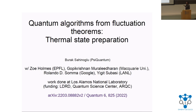The topic is quantum algorithms from fluctuation theorems for use in generating thermal states. Just as a disclaimer, we will see much less about fluctuation theorems compared to the original paper, so if you want to see the inspirations from the fluctuation theorems you probably better go to the paper. But I will try to highlight a few things from there as well.